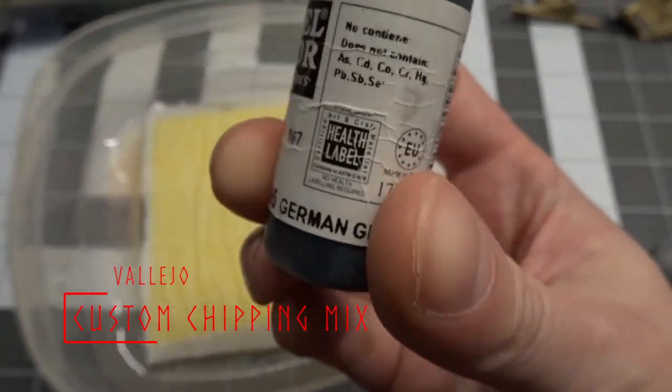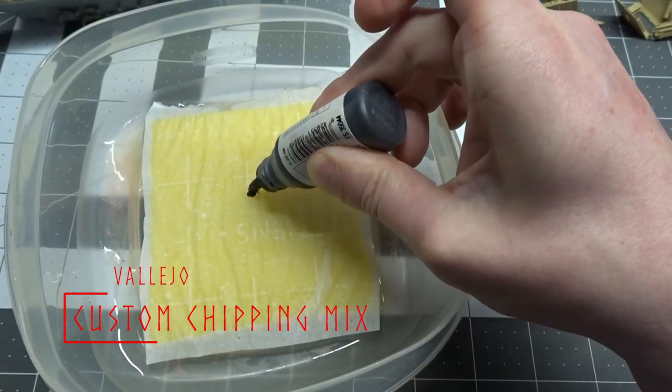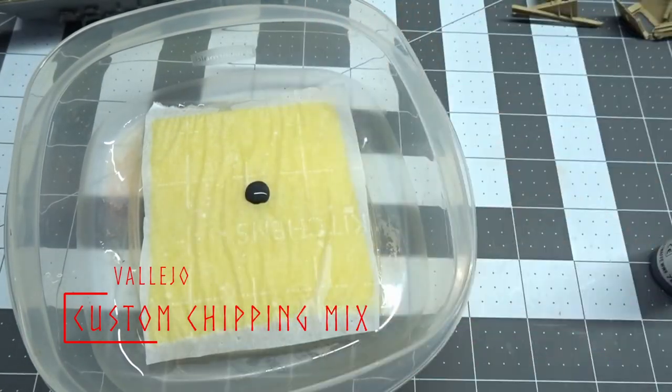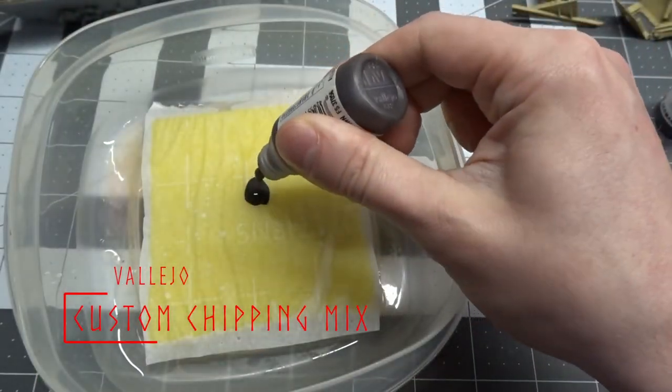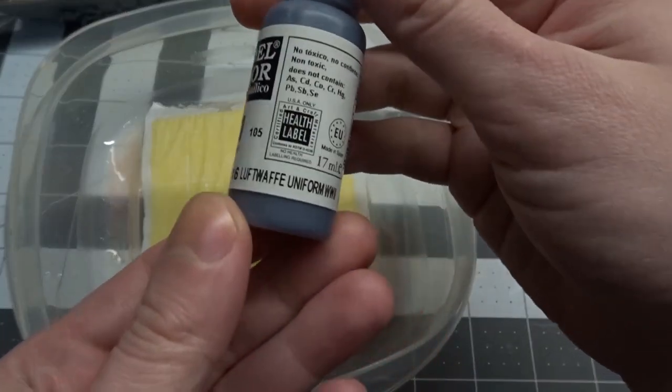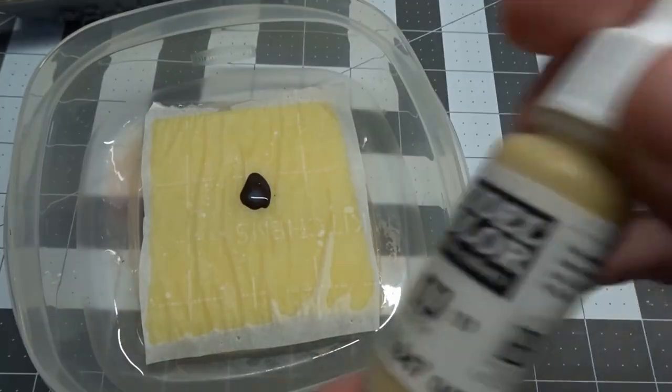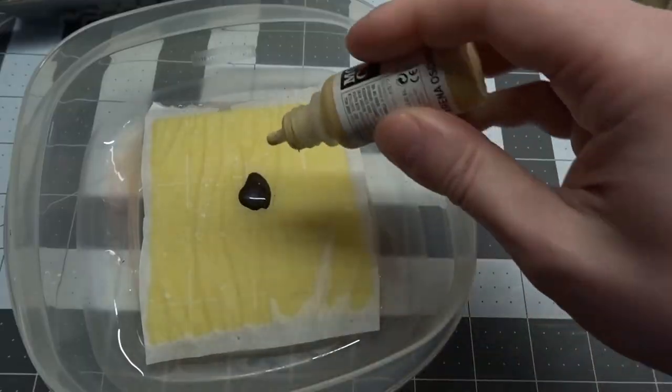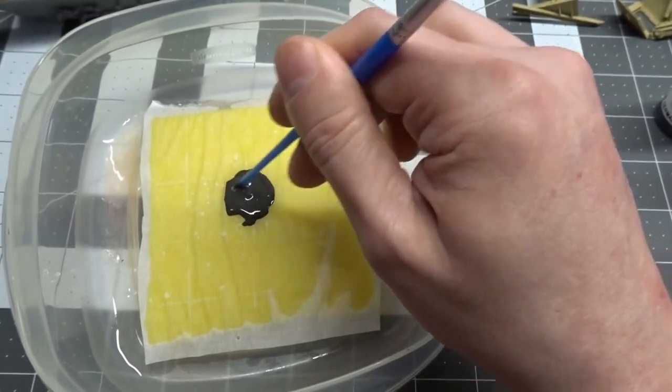Now for dark chipping. The first color I'm going to use is 4 drops of German Gray, 3 drops of German Camo Black Brown, 2 drops of Luftwaffe Uniform, 1 drop of Dark Sand, and finally 1 drop of tap water and mix it all up.